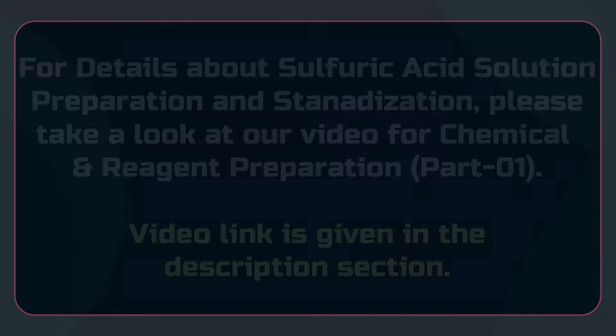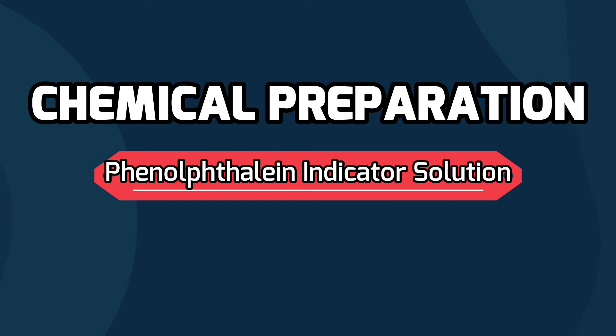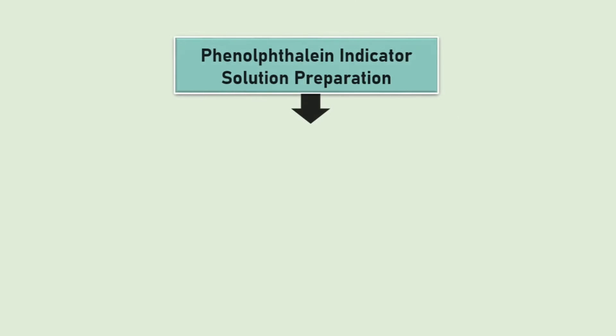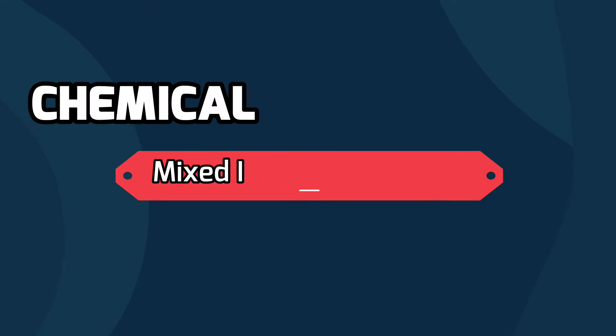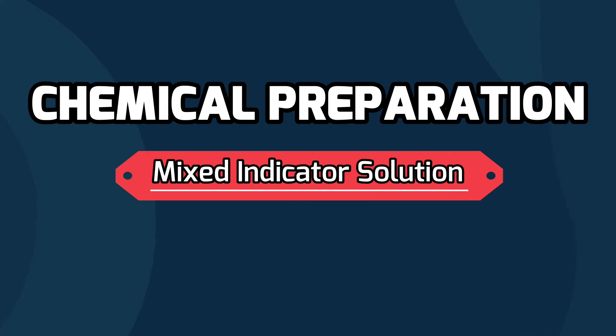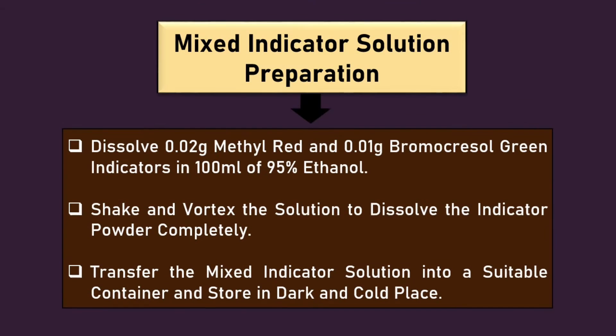For the preparation of phenolphthalein indicator solution, dissolve 2 grams of phenolphthalein powder into 100 ml ethanol and mix to dissolve. We can prepare the mixed indicator solution by dissolving 0.02 grams methyl red and 0.01 grams bromocresol green into 100 ml ethanol.